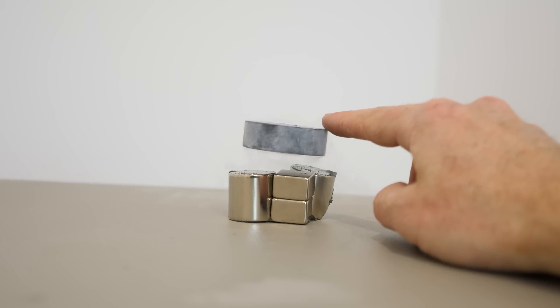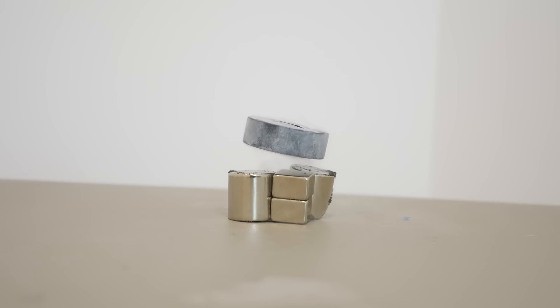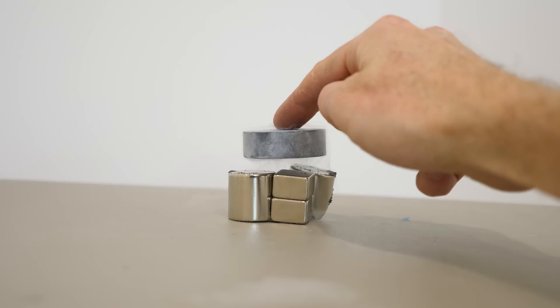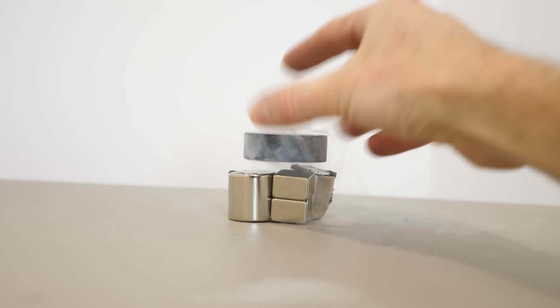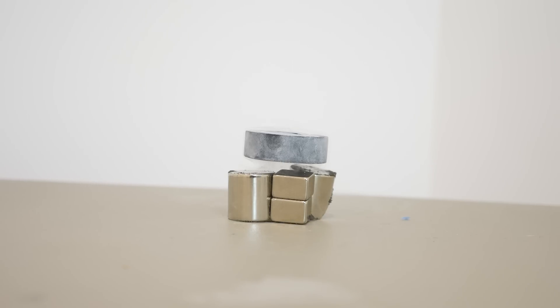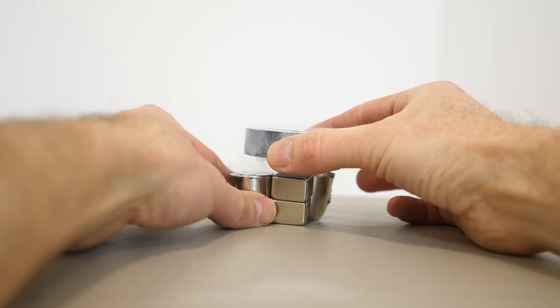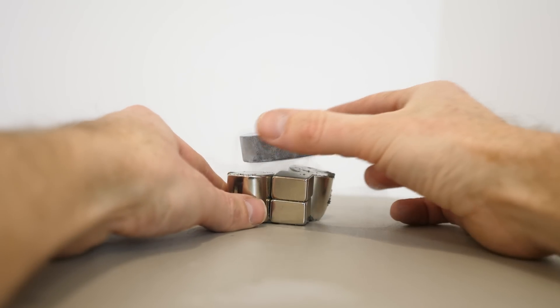This is happening because when I moved the magnet close to the superconductor, it caused a current to flow inside the superconductor that repels the magnetic field. This current flows indefinitely and exactly opposes the magnetic field caused by the magnet.